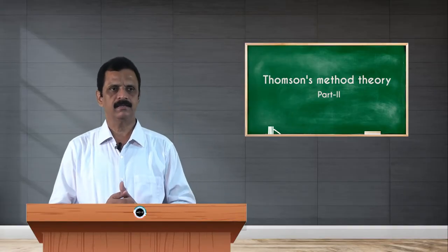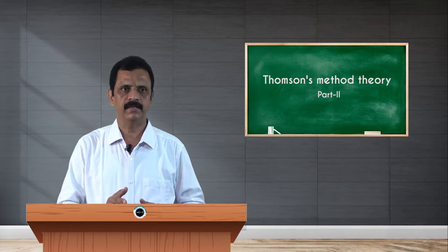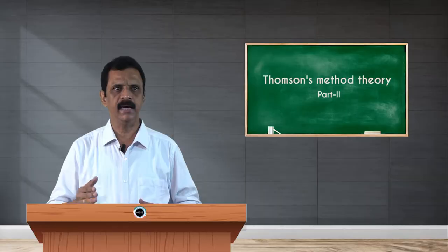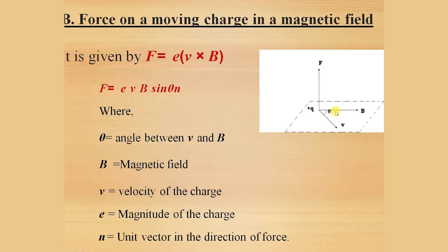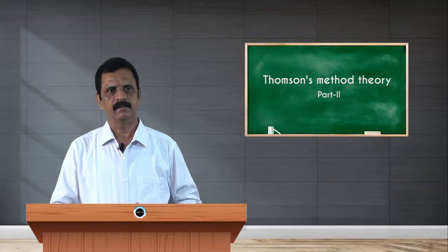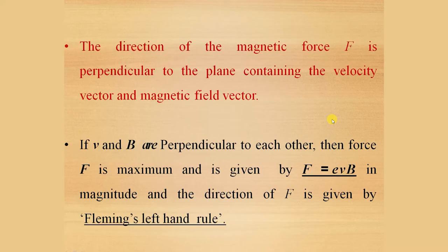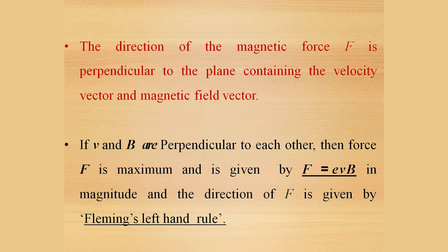In the special case where the angle between the velocity vector and the magnetic field vector — v and b — is 90 degrees, then sin 90 equals 1 and f becomes e vb, which is the maximum value. So whenever the velocity of the charged particle and the direction of the magnetic field are mutually perpendicular, the magnetic force will be maximum with magnitude e vb, and it will be perpendicular to both velocity and magnetic field.